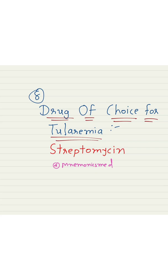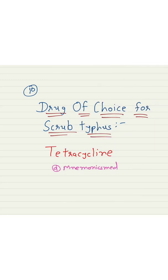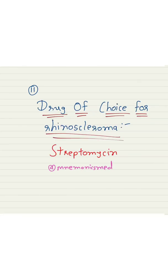You have to remember streptomycin for the drug of choice for tularemia. The drug of choice for chlamydia is tetracycline — an example is doxycycline. You have to remember doxycycline or a doxycycline-group drug for chlamydia. The drug of choice for scrub typhus is tetracycline. You have to remember tetracycline for the drug of choice for scrub typhus.